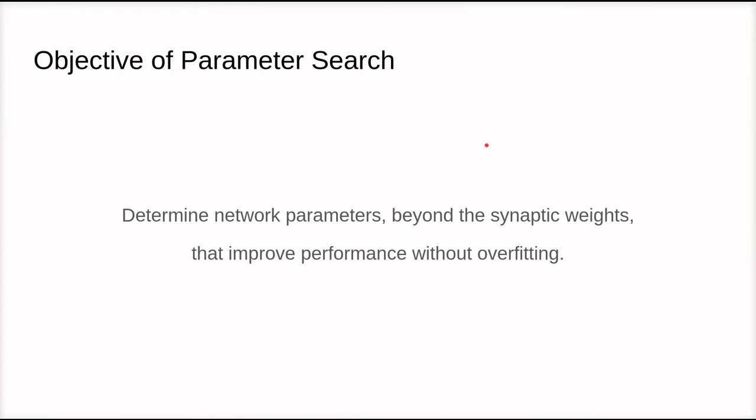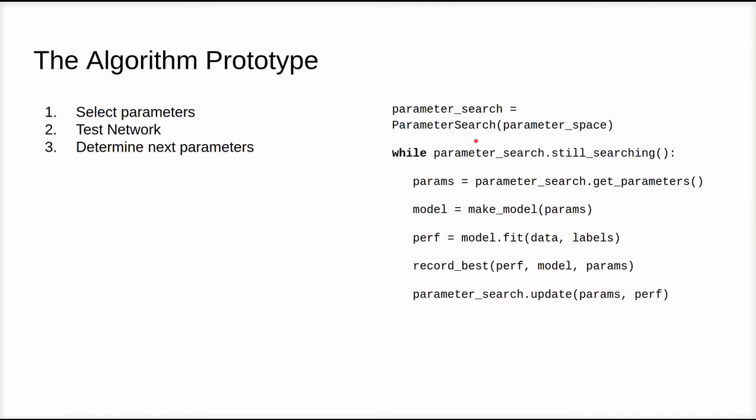So specifically, we want to determine the parameters above and beyond the synaptic weights that improve the performance, but we want to do it without overfitting. And this is something we covered in the previous lectures. Take, for example, the number of nodes in the hidden layer. If you make that arbitrarily large, you can get, practically speaking, almost perfect performance on your training data, but you will then overfit the training data and it'll perform poorly beyond that. Which is why the previous slide showed a plot of the validation performance instead of just the training accuracy.